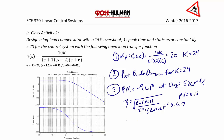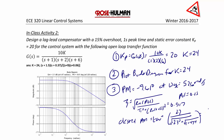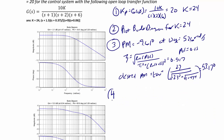From here we can get the desired phase margin, which equals the arctangent of 2 over zeta divided by the square root of negative 2 over zeta squared plus the square root of 1 plus 4 zeta to the fourth power. So the desired phase margin is 53.17 degrees. Step 4: the natural frequency equals pi over the time to peak times the square root of 1 minus zeta squared, which equals 3.67 radians per second.